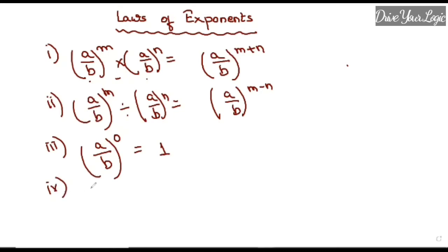Number four: if it has a negative power, for example (a/b)^(-m), whatever you will do, you just need to reciprocal. You all know what is reciprocal - just make the denominator at the top, that is numerator, and this will change, and the power will remain here. Clear?